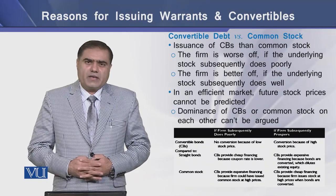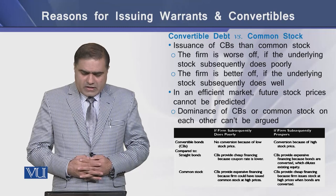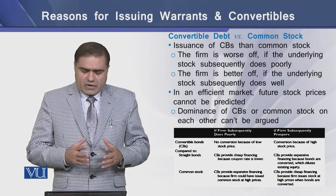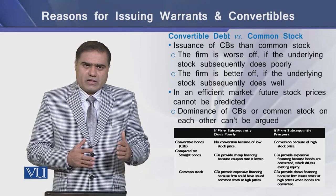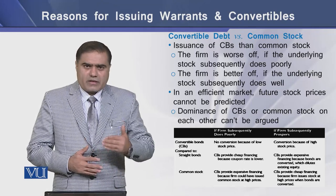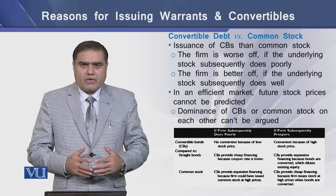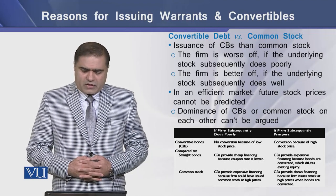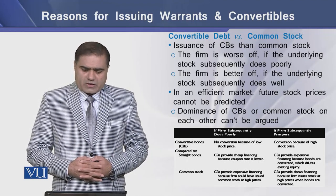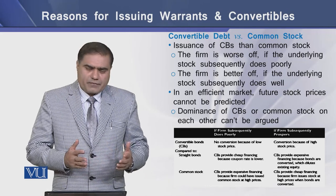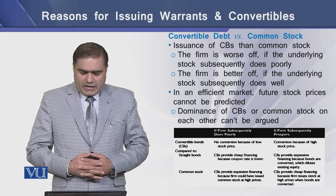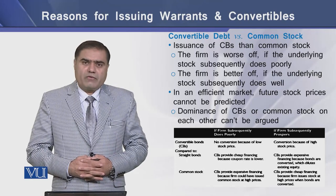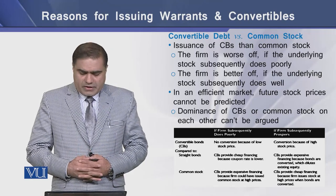The second comparison is convertible debt versus common stock. If the firm issues convertible bonds rather than common stock, the firm is worse off if the underlying stock subsequently performs poorly, and better off if the underlying stock performs well in the subsequent period.